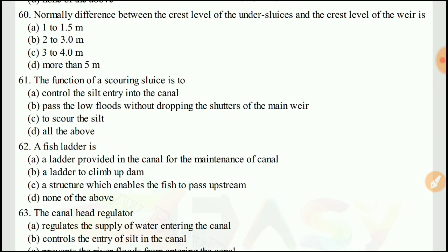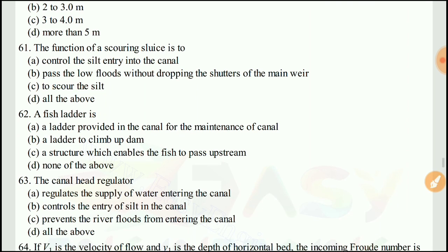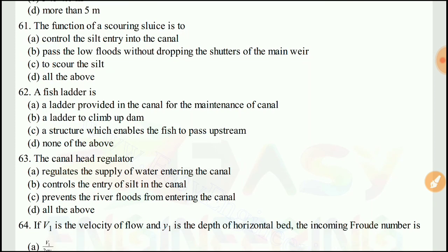Question 60: Normally, the difference between the crest level of the under-sluice and the crest level of the weir is about — the right answer would be A, one to one-and-a-half meters.